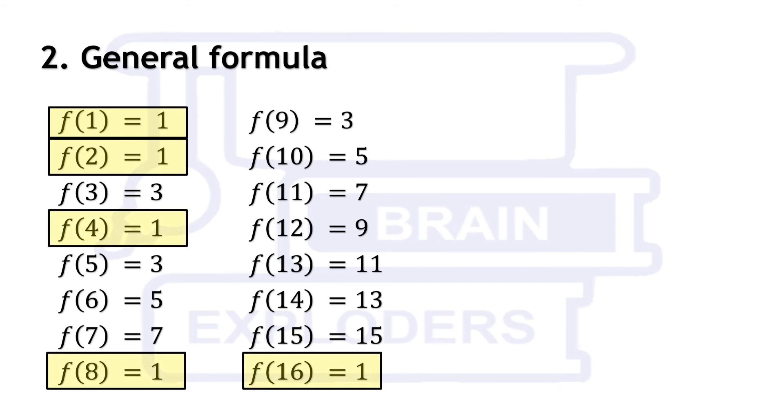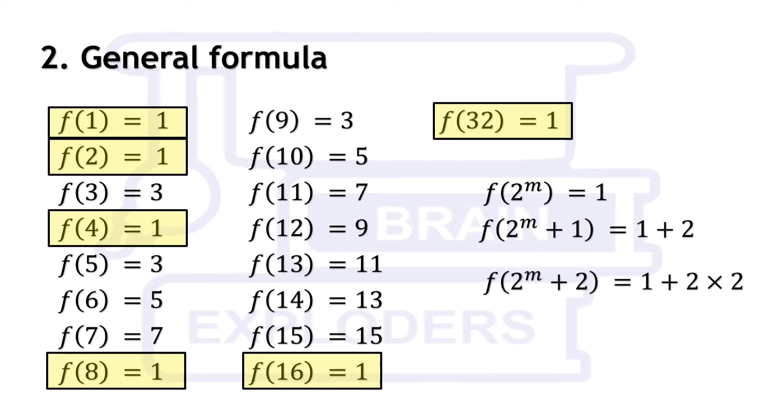After 1, until next 1 occurs in the sequence, the sequence behaves as an arithmetic progression with a common difference of 2. Let f of mth power of 2 be equal to 1. So, f of 2 raised to the power m plus 1 is 1 plus 2. Next two numbers of the sequence are 1 plus 2 times 2 and 1 plus 2 times 3.